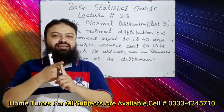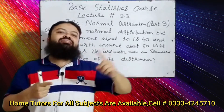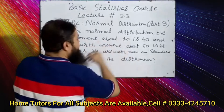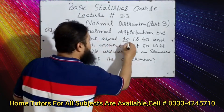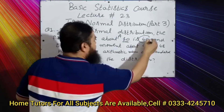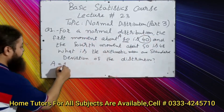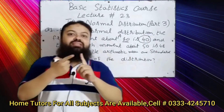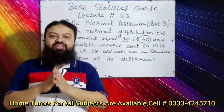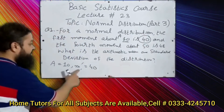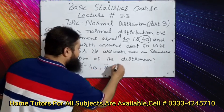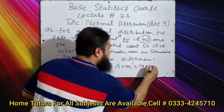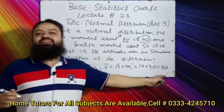Dear students, this is a very important and technical question. We are to calculate x-bar and standard deviation. The first moment about 10 — we know 10 is an arbitrary origin, capital A — so A = 10 and m1' = 40. We know the mean equals A plus m1', so x-bar = 10 + 40 = 50. The mean is equal to 50.